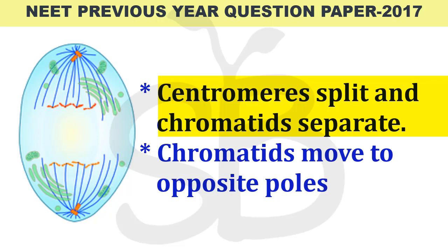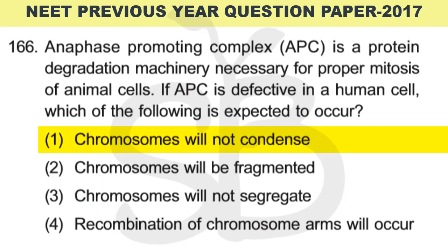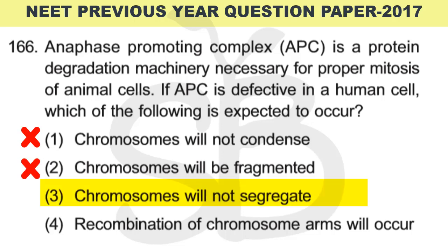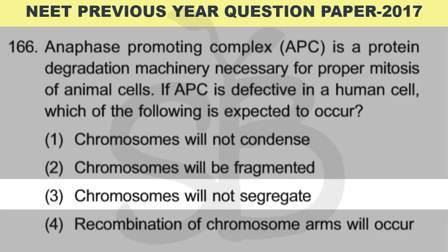The two important events in anaphase are: separating the chromatids and moving them to opposite poles. The Anaphase Promoting Complex helps make these two processes smooth. Looking at the options, option 3 — chromosomes will not segregate — is the correct answer, because if APC is defective, chromosomes will not separate to opposite poles. Option 4, recombination of chromosome arms, is incorrect since recombination is not an anaphase process.